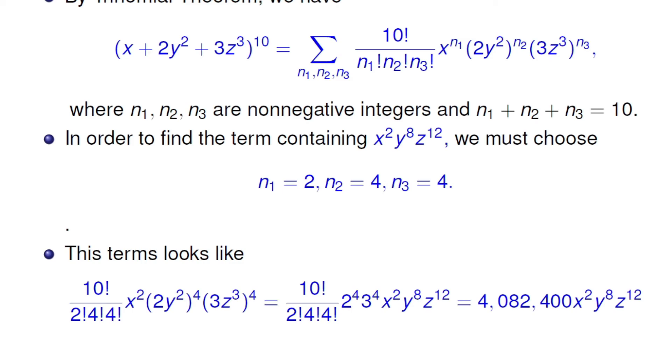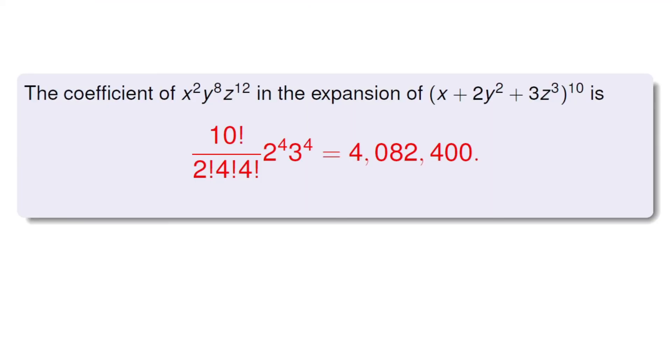And then if you use a calculator, you can find this value is 4,082,400. That is the coefficient for this term in that expansion. Here we go. The coefficient of this term in the expansion is 4,082,400.